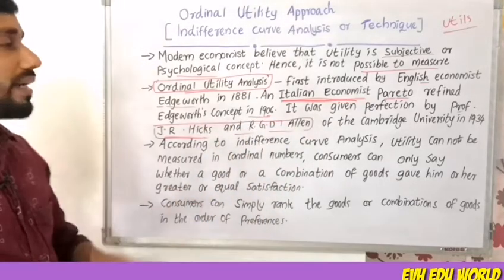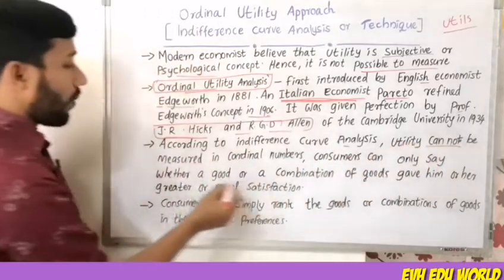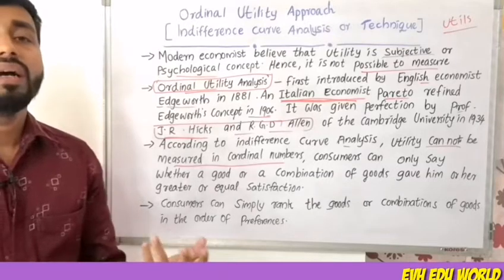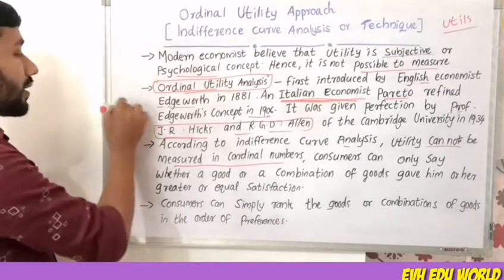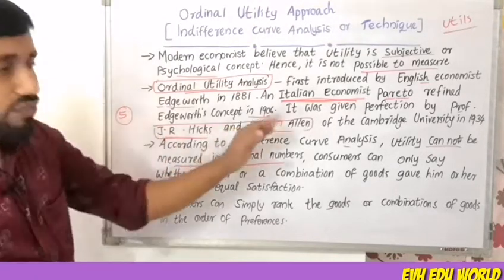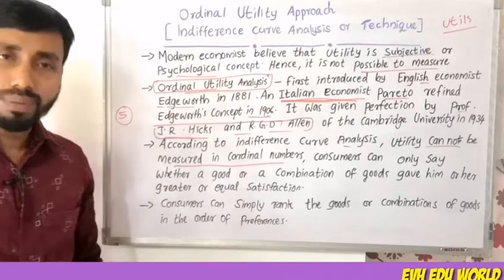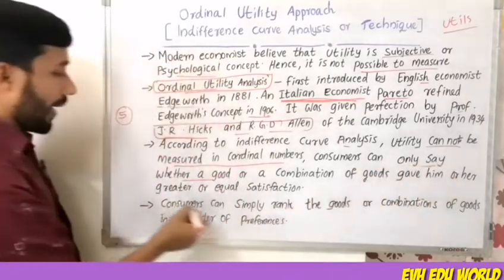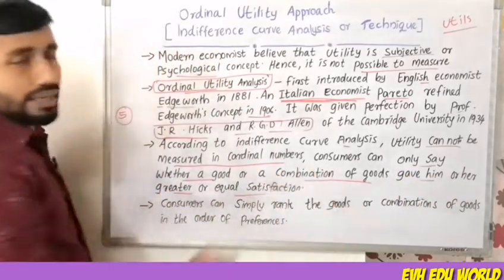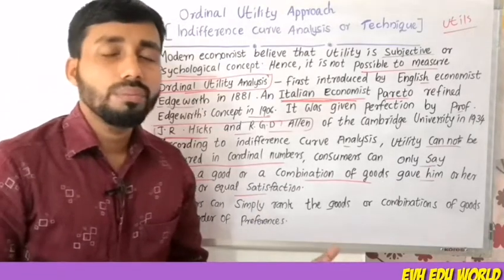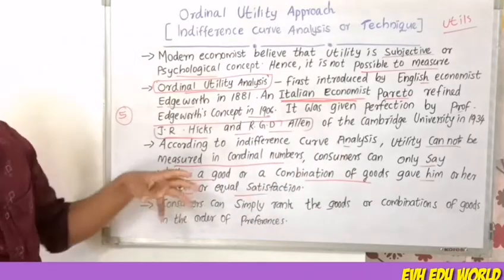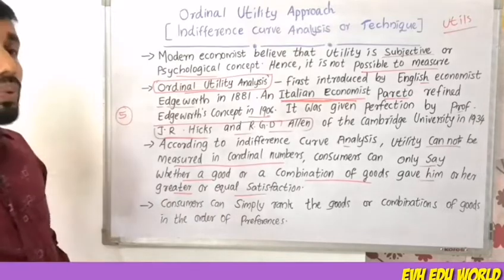According to indifference curve analysis, utility cannot be measured in cardinal numbers. A consumer can only say whether a good or a combination of goods gave him or her greater, lesser, or equal satisfaction. Utility is expressed ordinally rather than cardinally.